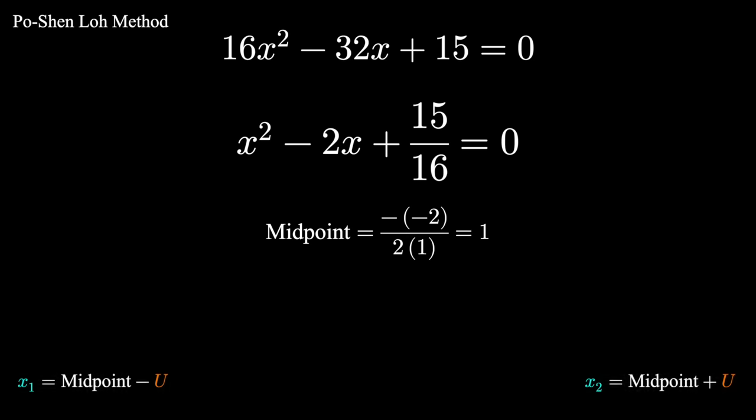The distance from the midpoint to the solutions is U, and our process showed U squared is the midpoint squared minus the C term. Quickly solve for U. The solutions are the midpoint minus U and the midpoint plus U, giving us our answer.